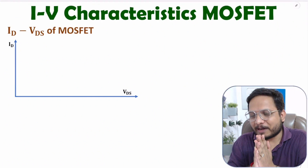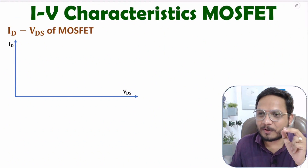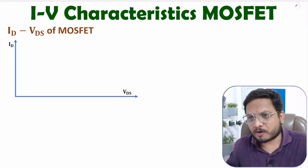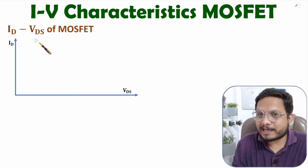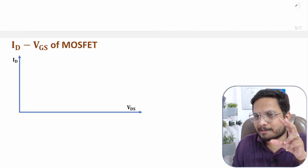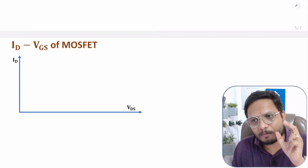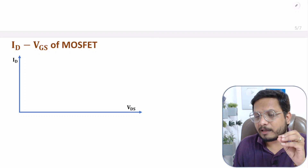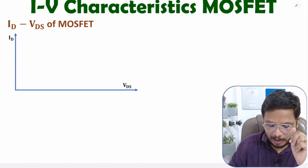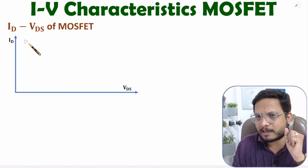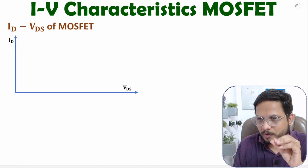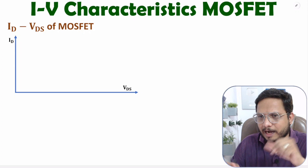Hello friends, welcome to Engineering Penda family. In this video I'm going to explain IV characteristics of MOSFET. I'll explain two characteristics: one is ID with respect to VDS, and second is ID with respect to VGS. To understand these characteristics you will have to go through my last video based on MOSFET, in which I explained the working of MOSFET and all related details.